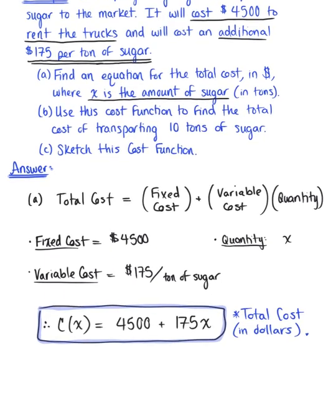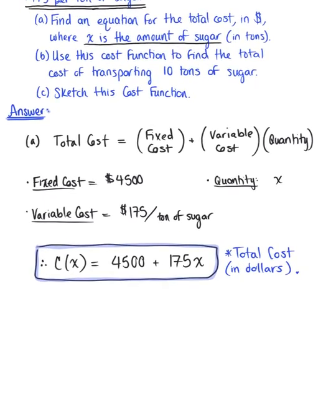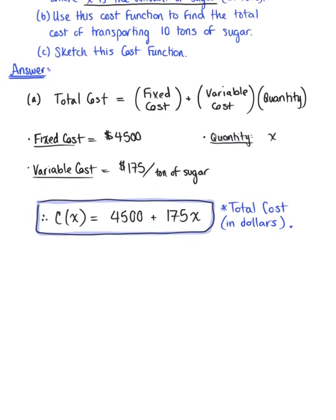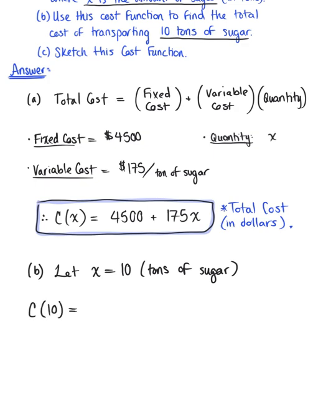So for part B, we want to know how much is it going to cost us to transport 10 tons of sugar. So here we're going to let our quantity x be 10, which is 10 tons of sugar. So evaluating this cost function at 10, we have c(10) is equal to $4,500 plus $175 multiplied by 10.